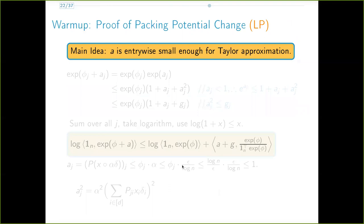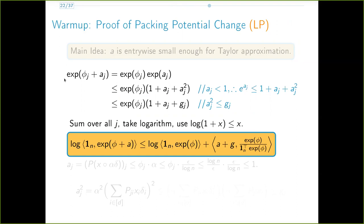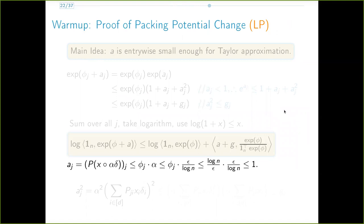Here is a complete proof of the packing potential lemma for the LP case. The first inequality is by Taylor expansion around a and the second is by this bound, aj squared, upper bounded by gj. The reason that aj is small is by feasibility of x, which tells us that the max among all entries of px is small, which means that every entry of px is small. The bound on aj squared comes from Cauchy-Schwarz inequality and again the feasibility of x. This concludes the proof of the packing potential lemma in the LP setting.